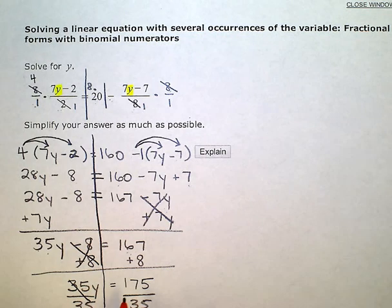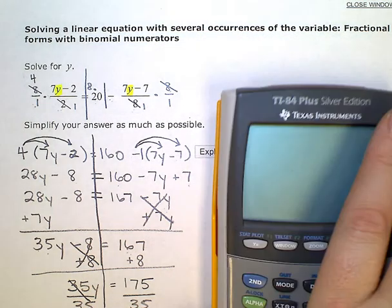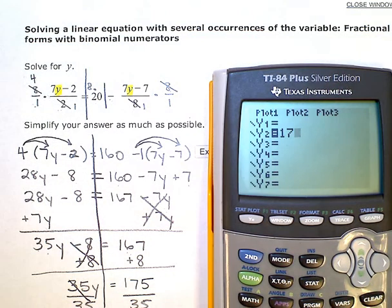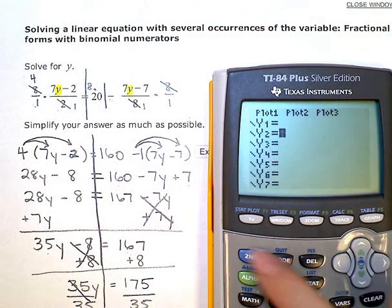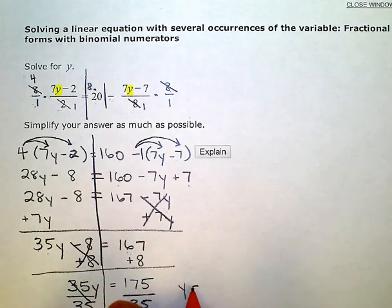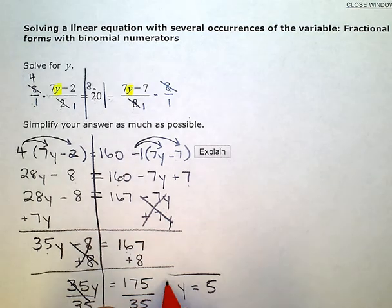And 175 divided by 35 gives me y equals 5 as my solution.